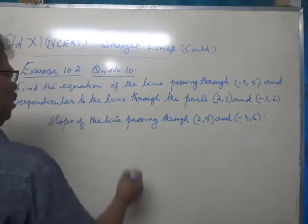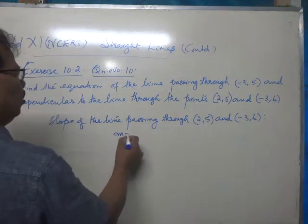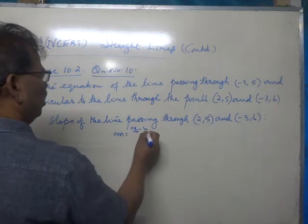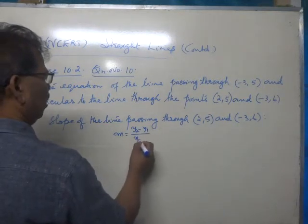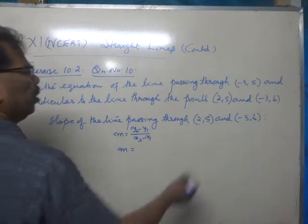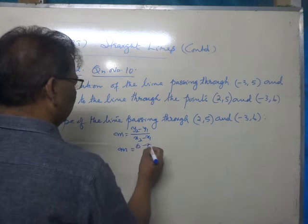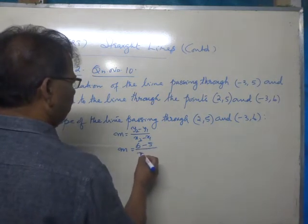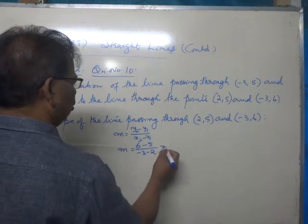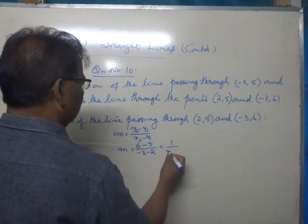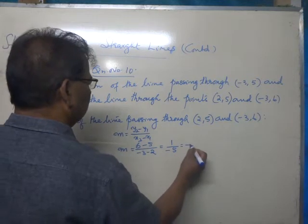M is equal to Y2 minus Y1 by X2 minus X1. M is equal to Y2 is 6, 6 minus 5 by -3 minus 2. That is 1 by negative, that is -1/5.